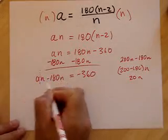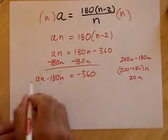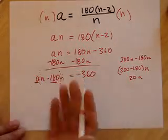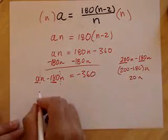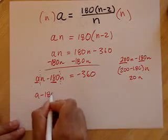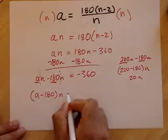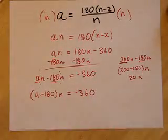So I'm going to subtract the coefficients of n. This guy minus this guy, just like I would here, 200 minus 180. And I get A minus 180. Come how nice this is. n equals negative 360. Almost done.